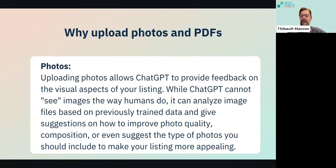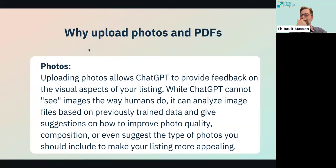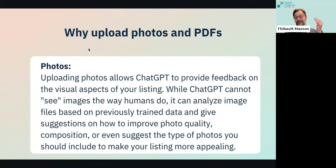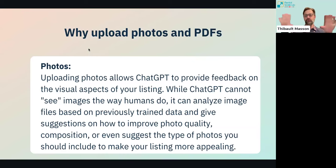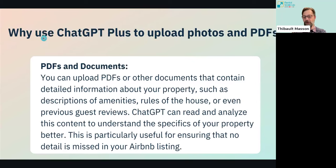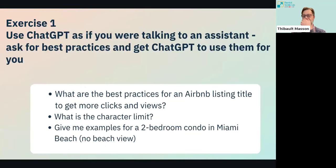One more point on photos: when I upload photos to ChatGPT Plus, it doesn't truly see them but it can detect patterns. It can tell you a photo is too dark, the bed isn't neat, there's too much clutter — things that other listing photos typically avoid. It's not magic, but it's fantastic for getting feedback. For captions, platforms like Airbnb analyze photo patterns to put you in categories like 'Amazing Pools.' A good caption reinforces that.